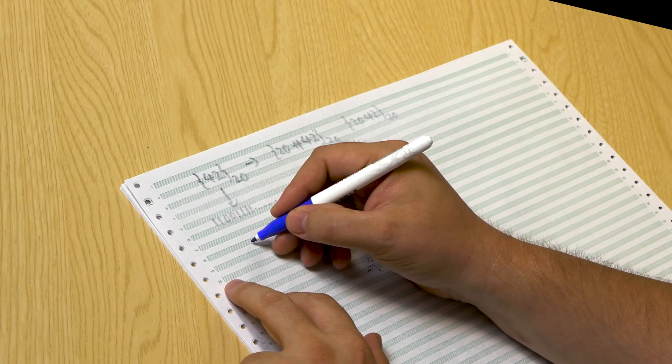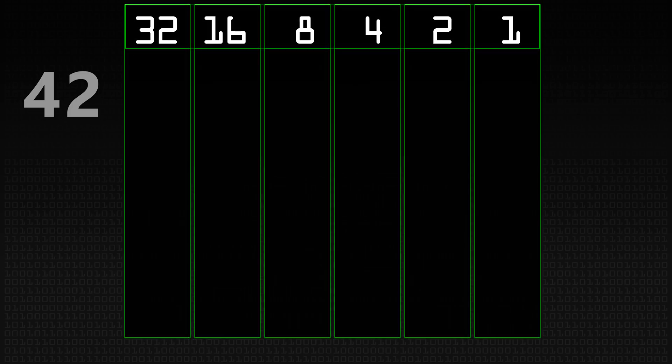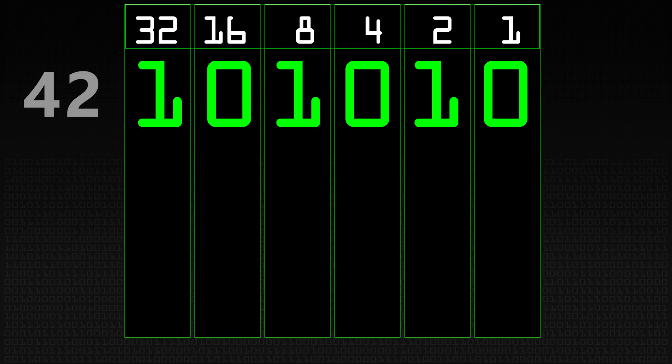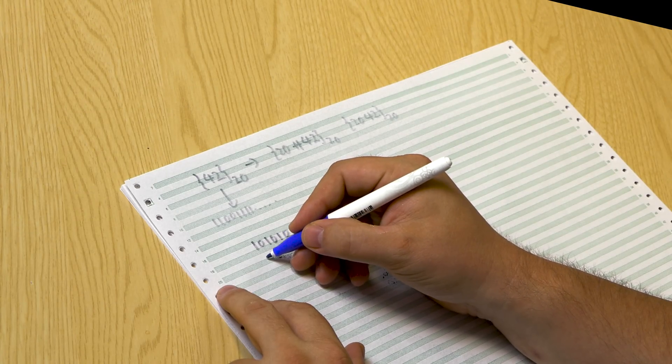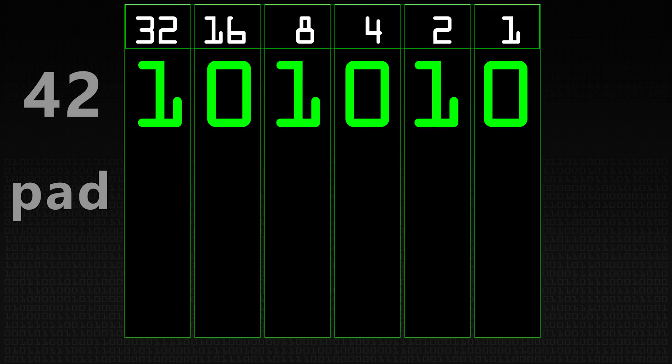And what that is, is you have some binary message. So 42, for example, is 32 plus 8, no 16, plus no 4, plus a 2, and no 1. So I believe the binary representation of 42 is 1, 0, 1, 0, 1, 0. And we then come up with a random binary pad. So let's say 0, 0, 0, 1, 0, 1.